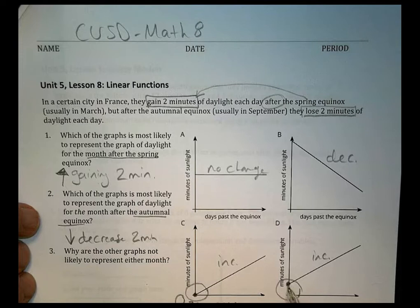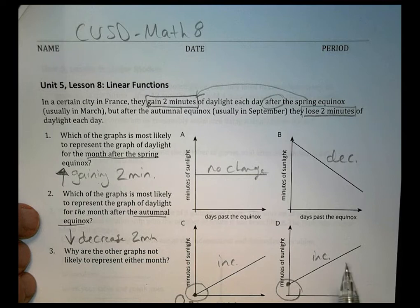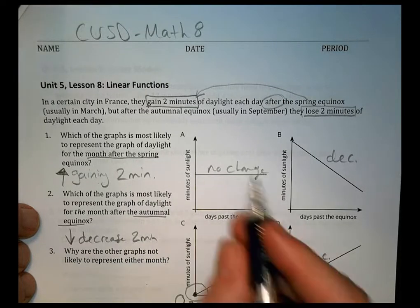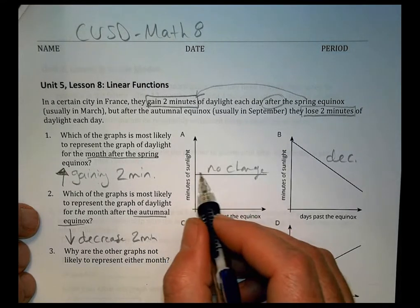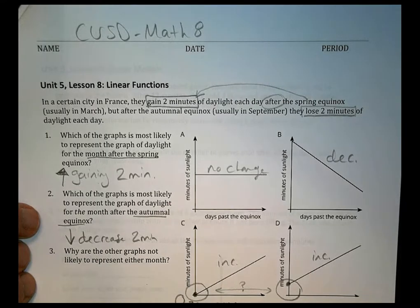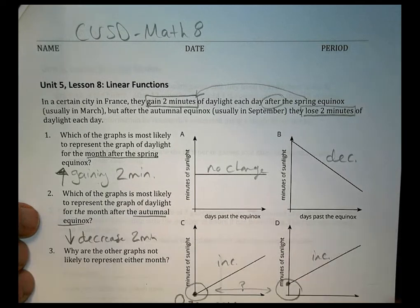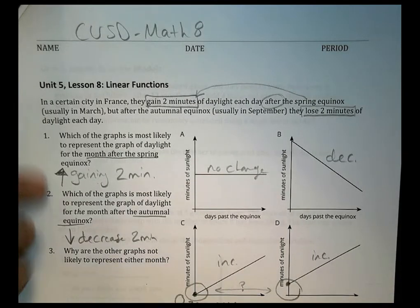Over here, the starting point is at least having some number, whatever number that's going to be. It could be an hour, it could be 180 minutes. But over here there's no sunlight whatsoever. Here there's some. So you need to decide between those two which one makes the most sense. On this one we can see that there's no change taking place, so the number of minutes of sunlight is exactly the same no matter what. So what could that represent?